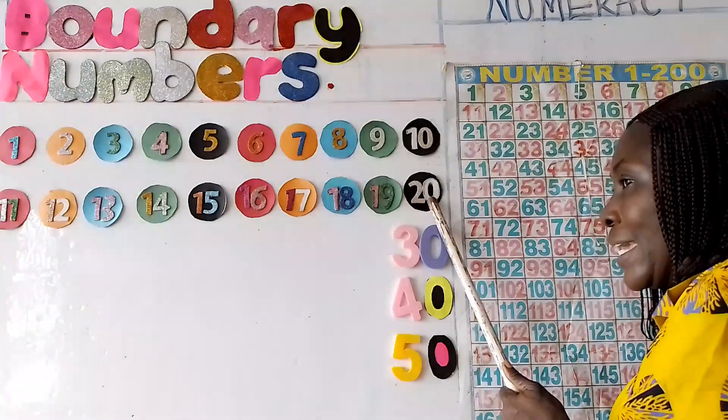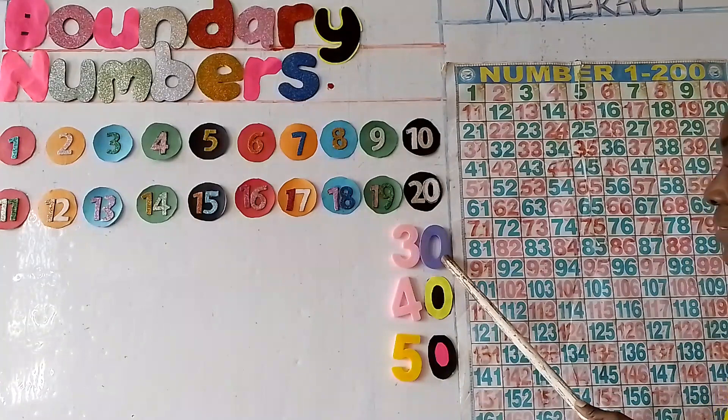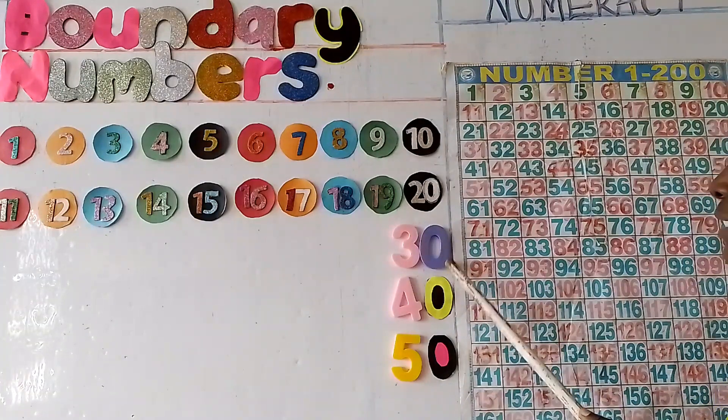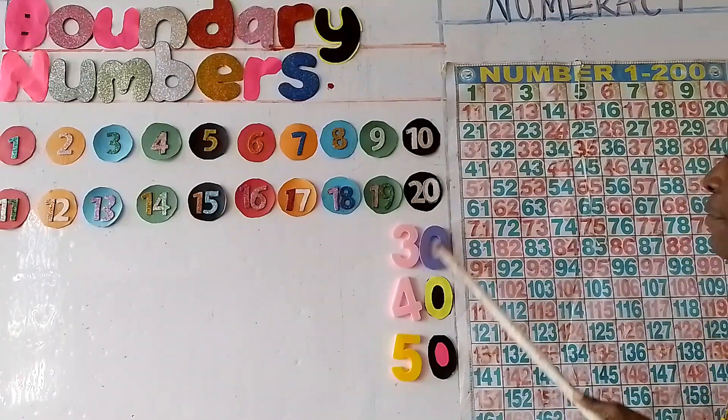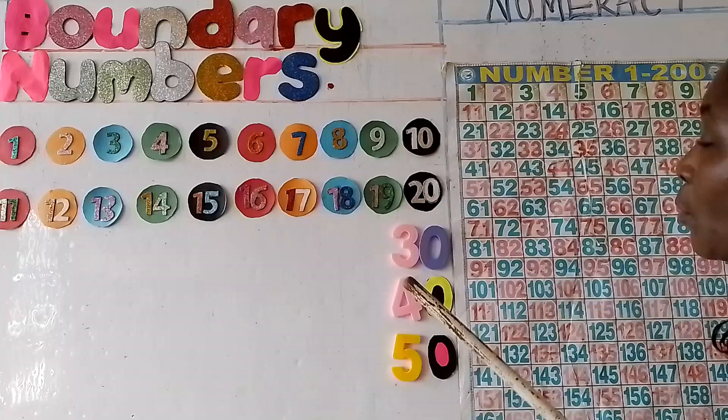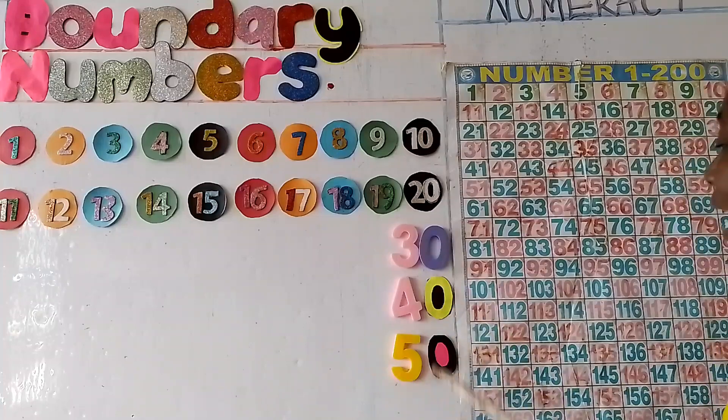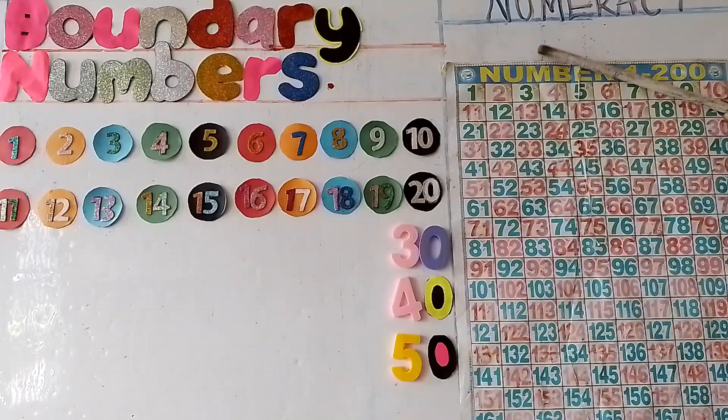The next multiple of 10 on the number line is 30. The next multiple of 10 after 30 is 40. The next multiple of 10 after 40 is 50. You can see it clearly here.